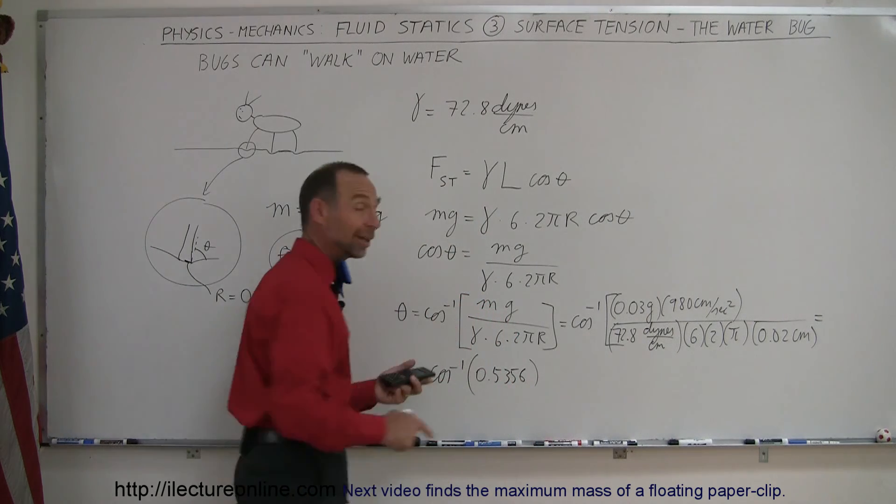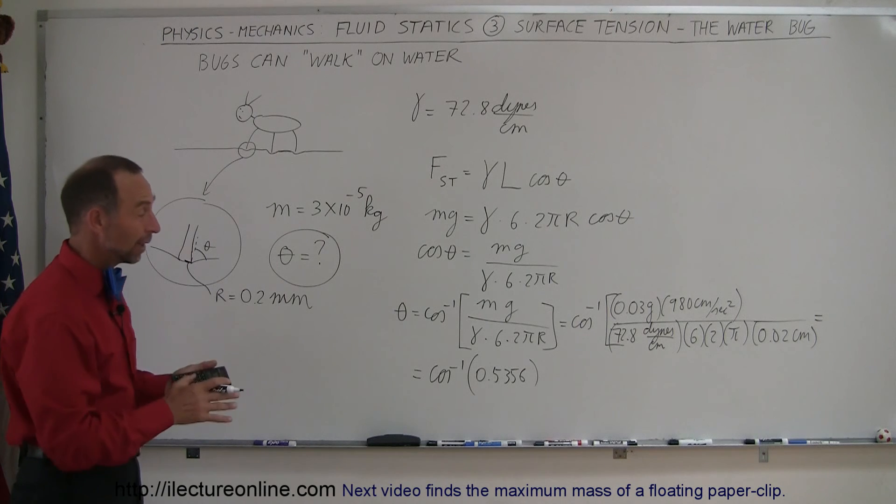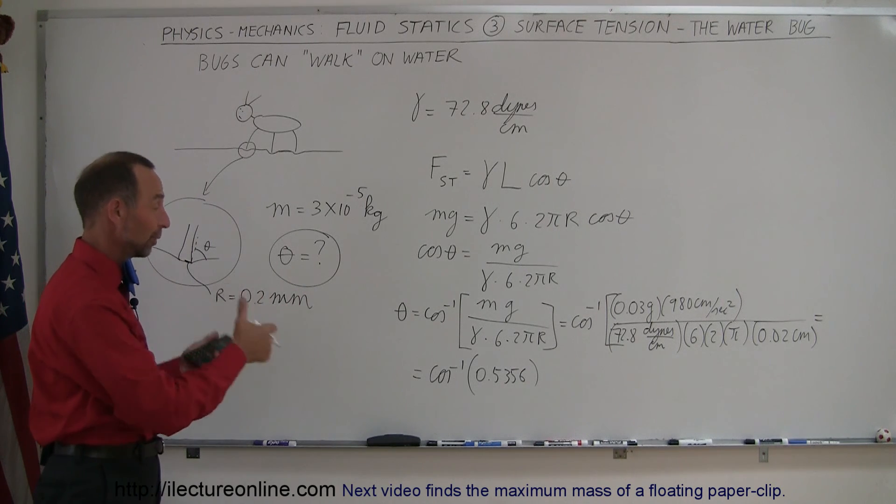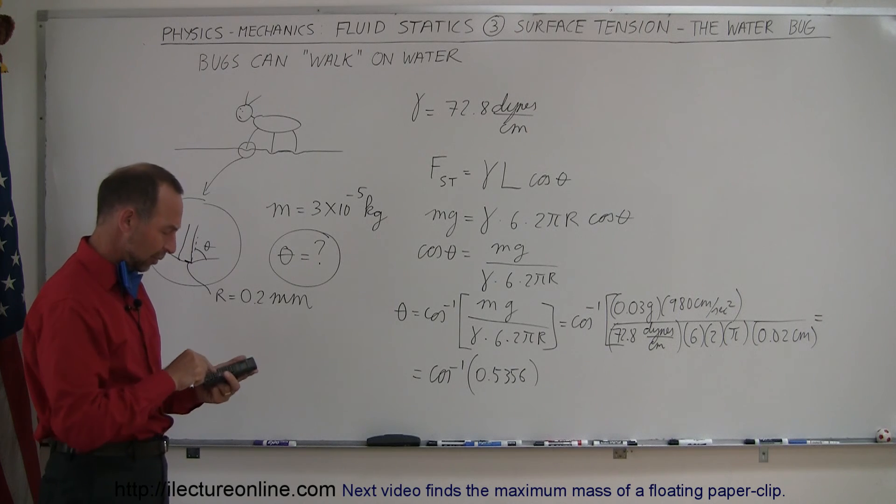Now that's encouraging because if that came out to be greater than 1 then the bug wouldn't be able to float. The fact that it's somewhere between 0 and 1 we're in good shape. So now taking the arccosine of that.